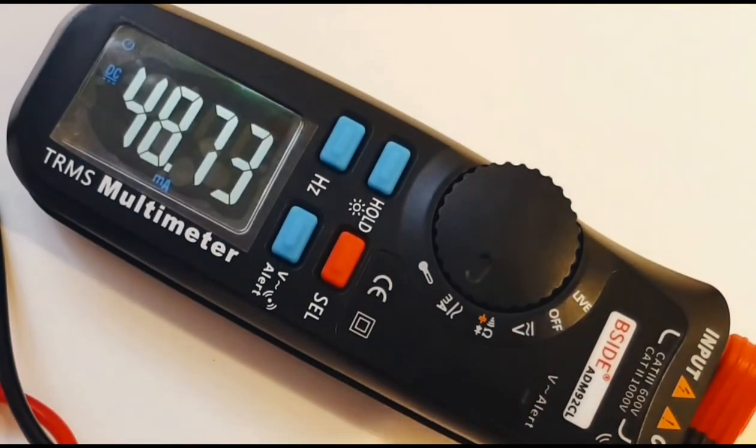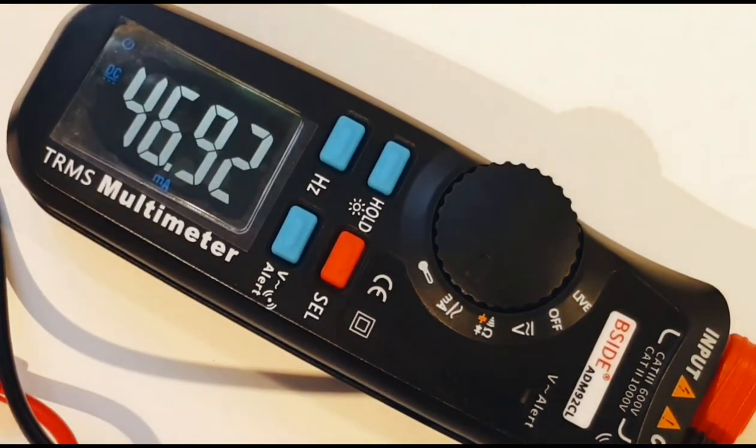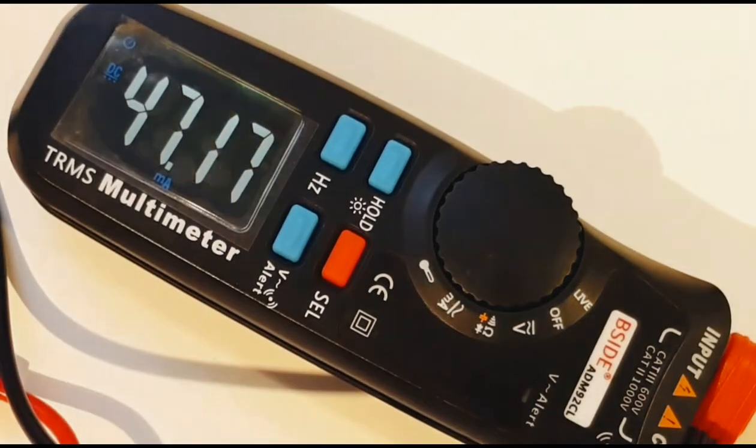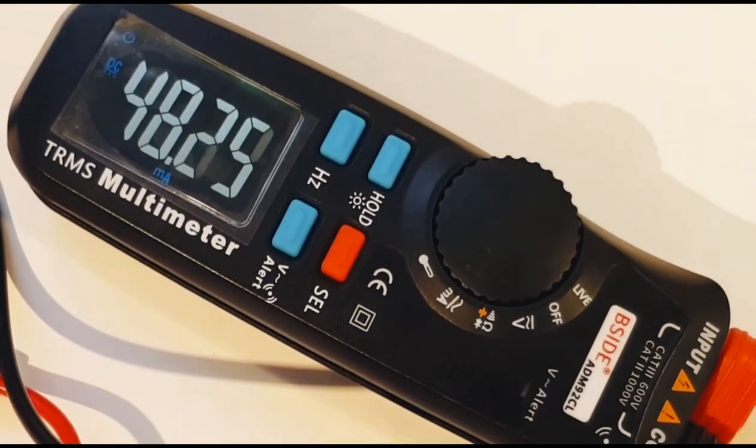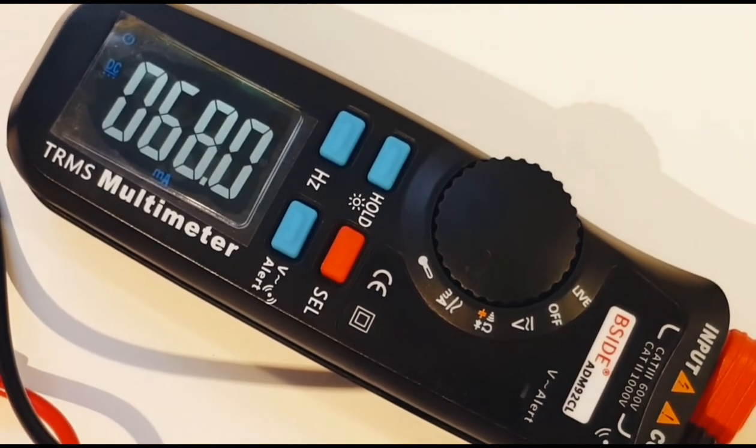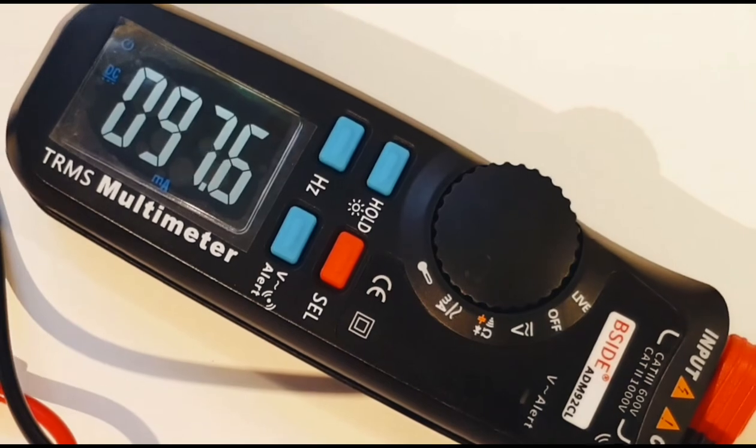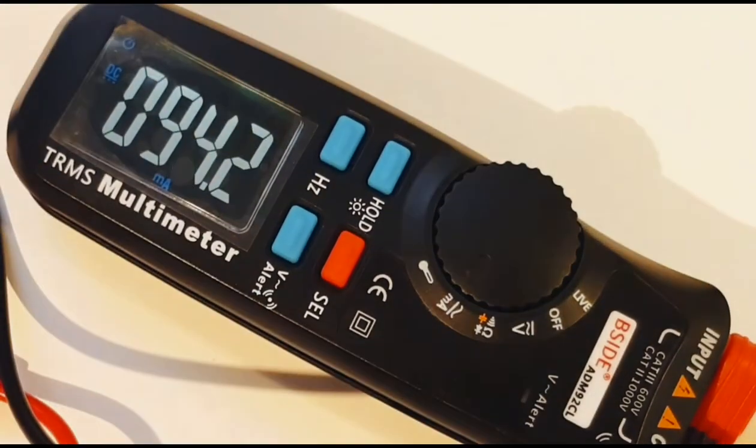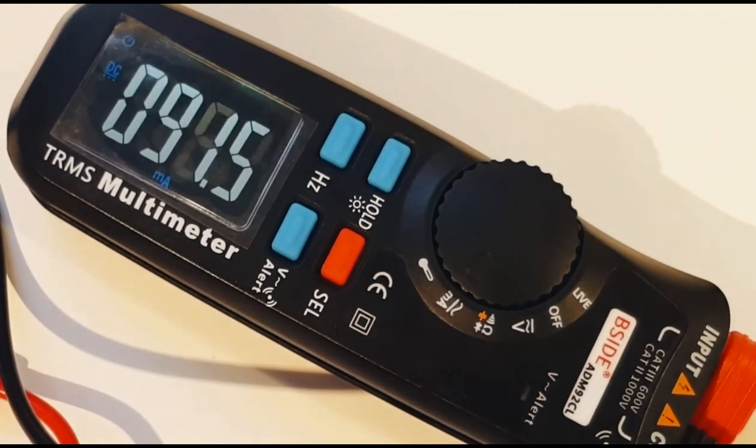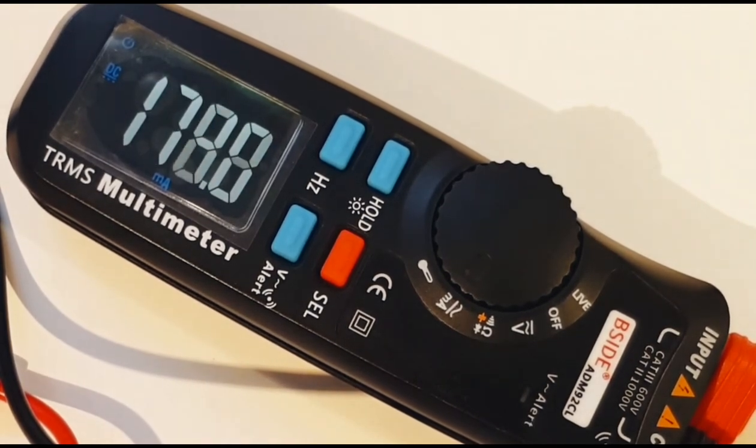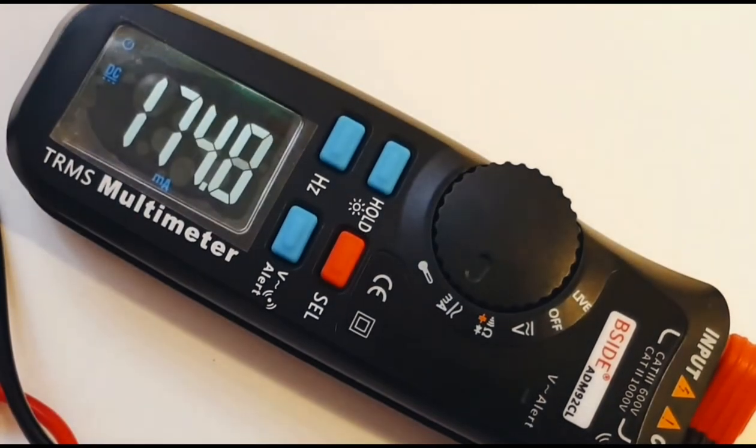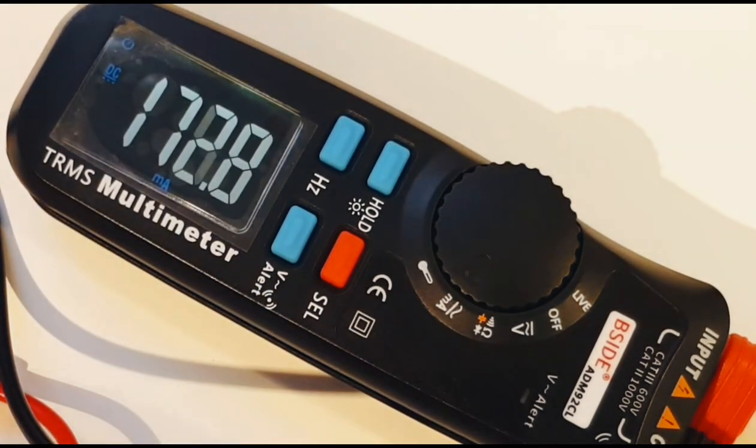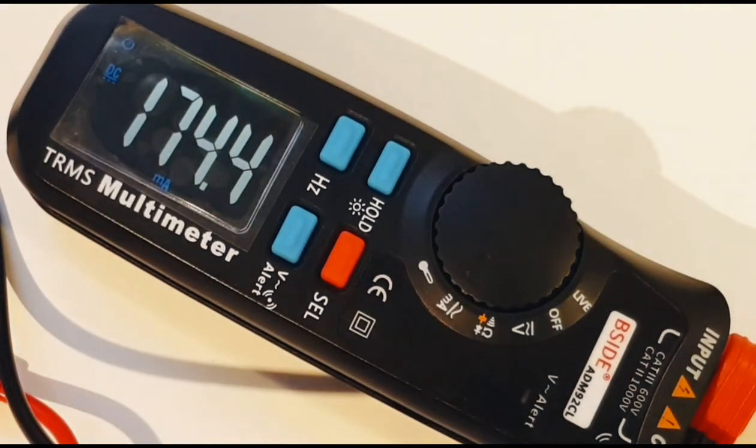Okay, we're sitting in the milliamps range right now. Like I said, this only does up to 200 milliamps. Not very good. We're sitting at around 45 milliamps. Let's take it up to around 90 or so. So showing up is around 94. Let's go a little bit higher. 170 milliamps. So yeah, in the milliamp range, it seems to be okay. But once again, you are limited by that very low milliamp range.